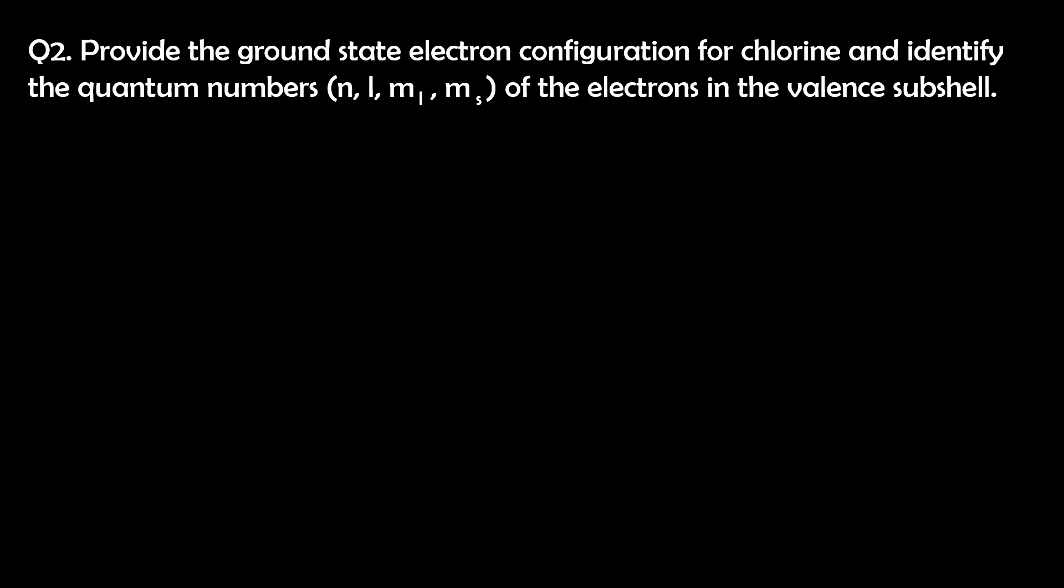Question 2. Provide the ground state electron configuration for chlorine and identify the quantum numbers, so that's N, L, M sub L, and M sub S, of the electrons in the valence subshell.